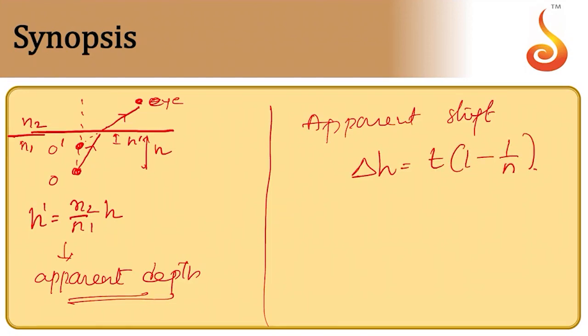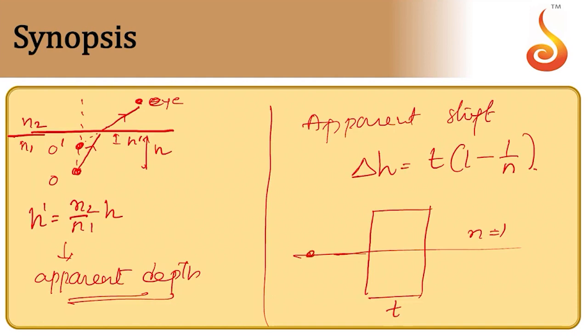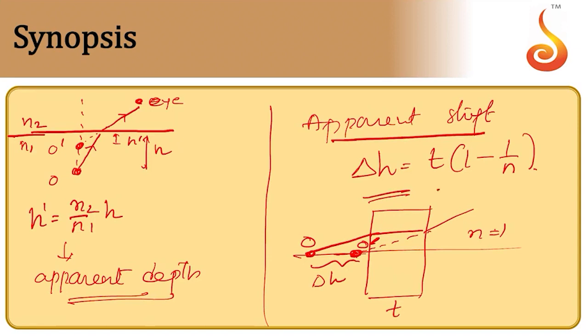The apparent shift is t(1 - 1/n), where t is the thickness of the slab. The apparent shift is always along the direction of the incident ray, and h and h-dash are always measured from the surface.